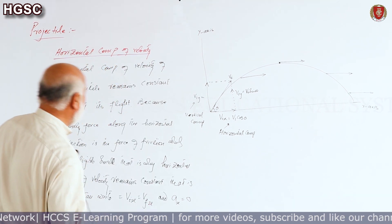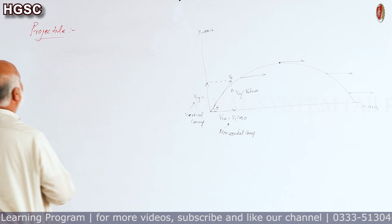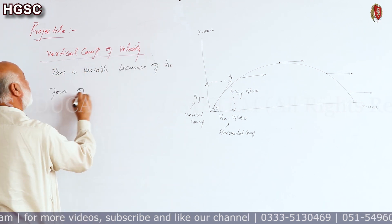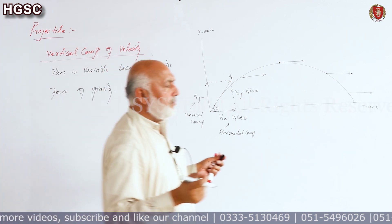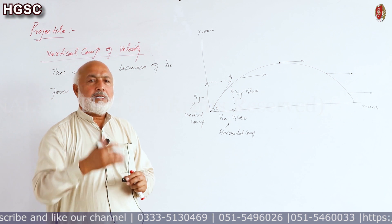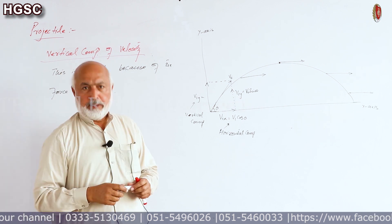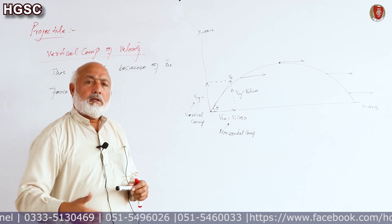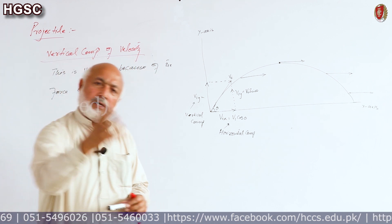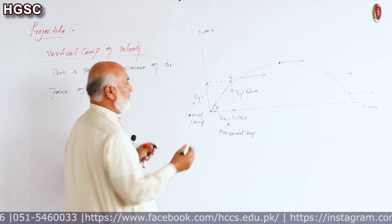Now we discuss the vertical component. The vertical component of velocity is variable because of the force of gravity, which is always present and always acts vertically downward. Initially, the vertical velocity viy is directed upward while gravity acts downward, so — like applying brakes to a car — when force and velocity are opposite, the velocity decreases. This causes a decrease in the vertical component during the upward phase.